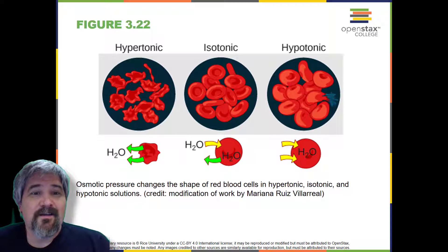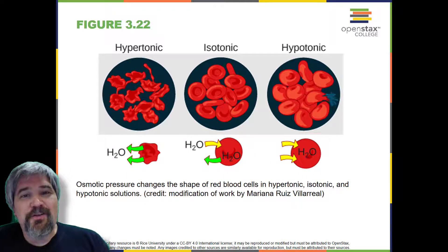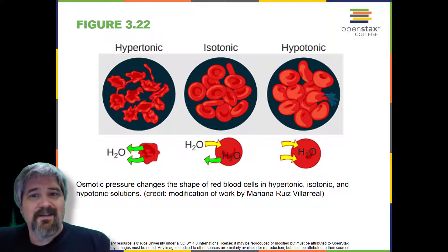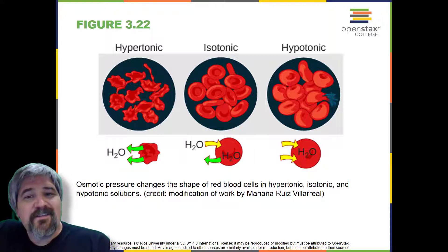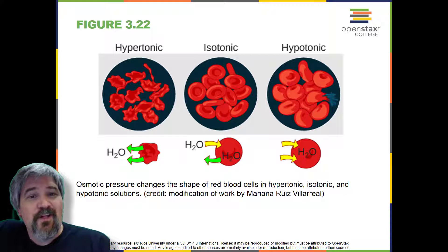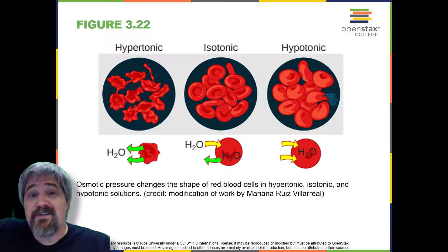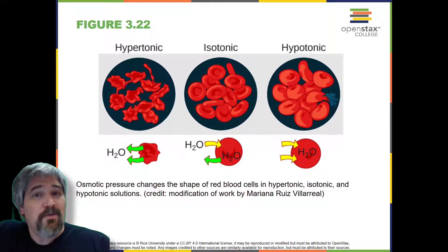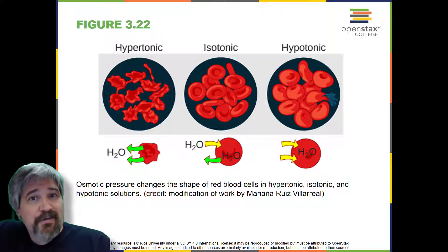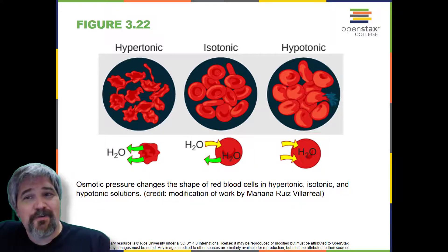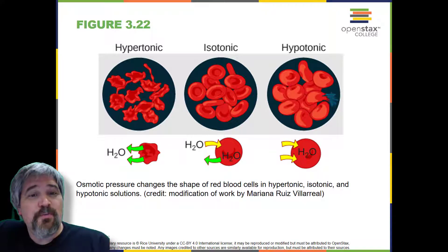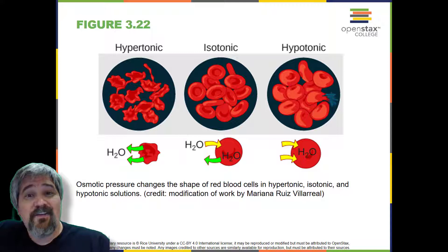Tonicity describes the amount of solute in a solution. The measure of the tonicity of a solution, or the total amount of solutes dissolved in a specific amount of solution, is called its osmolarity. Three terms — hypotonic, isotonic, and hypertonic — are used to relate the osmolarity of a cell to the osmolarity of the extracellular fluid that contains the cells.